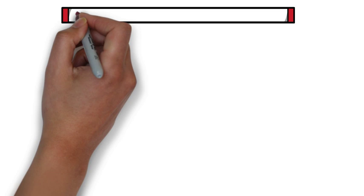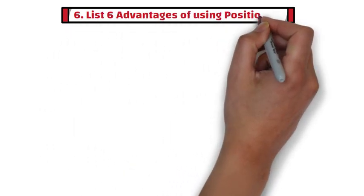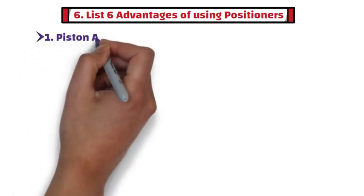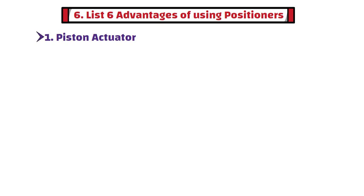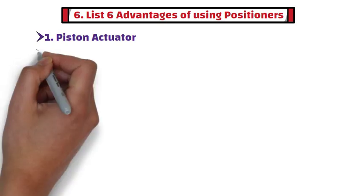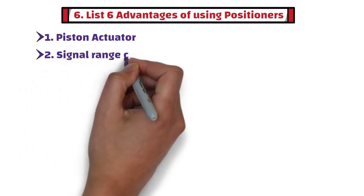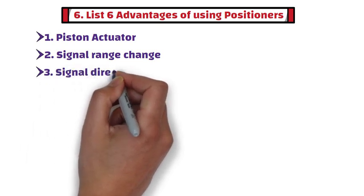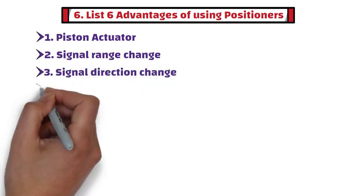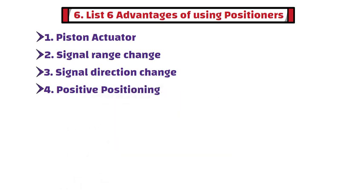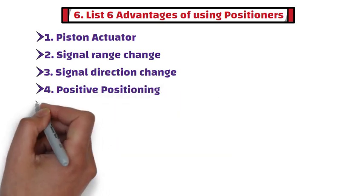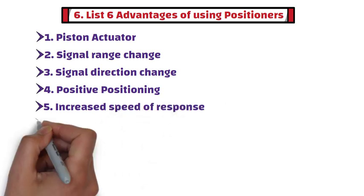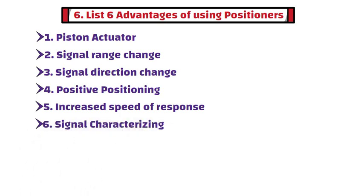Sixth question: List six advantages of using positioners. A positioner can be useful as a piston actuator by supplying air to adjust the valve in response to control signals. It can be useful for signal range change and signal direction change. Valve plug positive positioning can be achieved using a positioner. Positioners can also increase speed of response and be useful for signal characterizing.